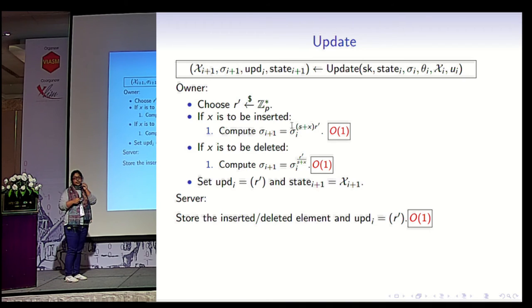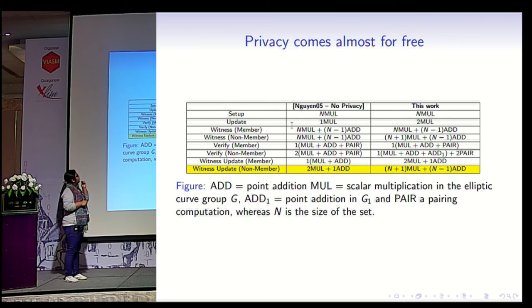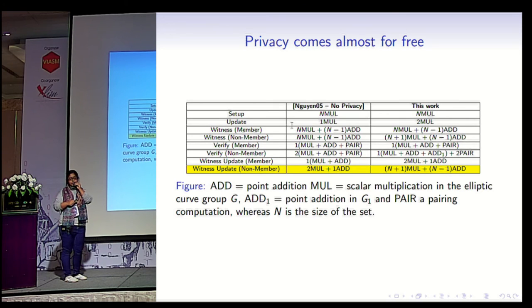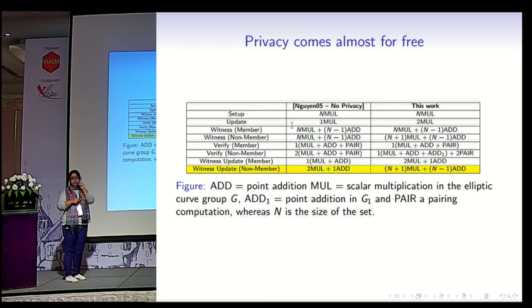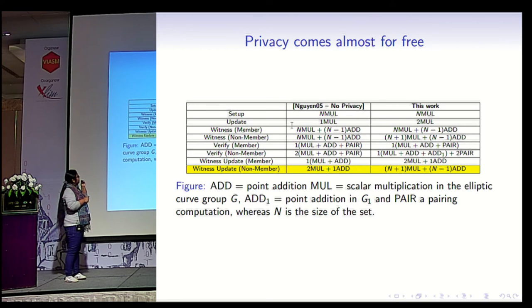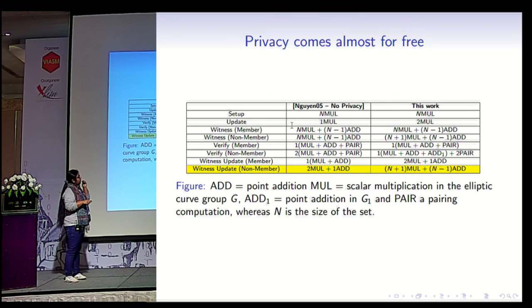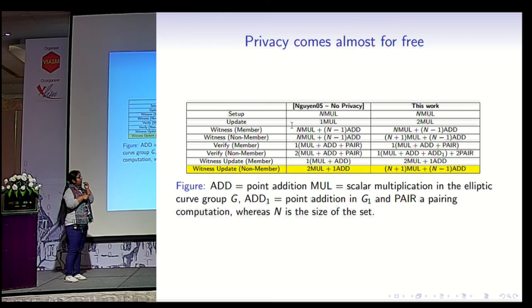This is the zero-knowledge accumulator construction in its entirety. Comparing it with the Gouen construction of bilinear accumulators, which has no privacy, we see that privacy essentially comes for free because of this clever randomization technique, except for the witness update operation, which is more expensive than Gouen's construction — this is the price we pay for privacy. But all other operations are comparable or exactly the same.